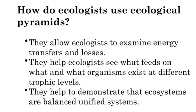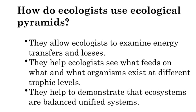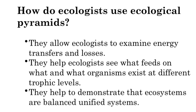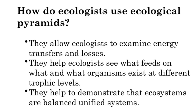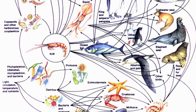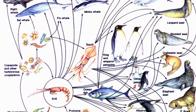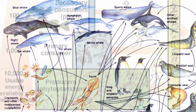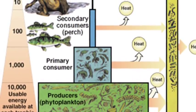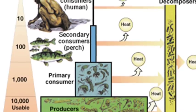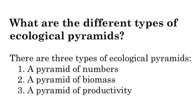How do ecologists use them? They let us see how energy is transferred and lost, help us see what feeds on what, and show what organisms are found at different trophic levels. They help make sense of an ecosystem to see if it's in balance. For example, a food web is accurate for showing relationships but is crazy to read and really difficult to see what's in each trophic level.